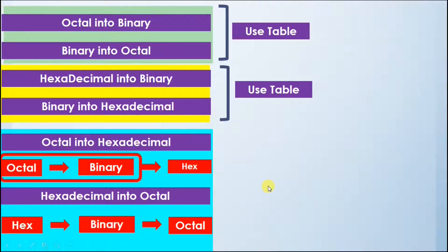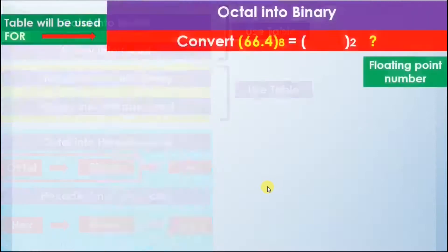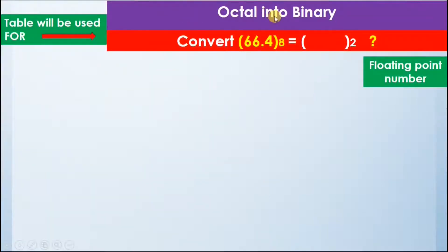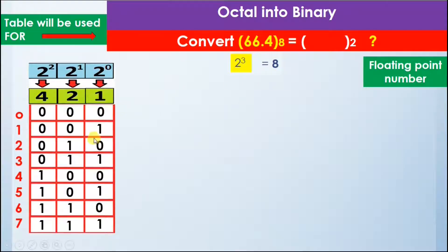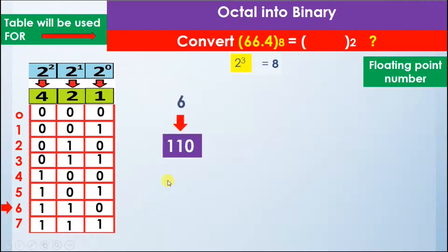First, we will see how to convert an octal number into a binary number. In this example, we are given a floating point number. Since 2 raised to power 3 equals 8, we use a table with 8 rows and 3 columns. We look at the digit 6 and find its binary value in the table, which is 1 1 0. We then move to the next digit, 6 again, and write it as 1 1 0.